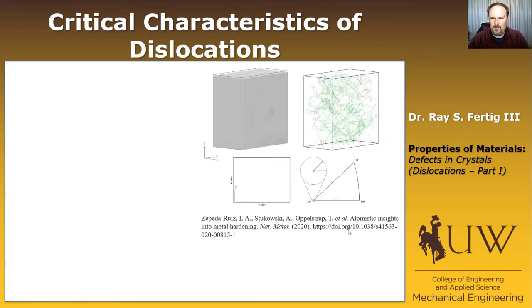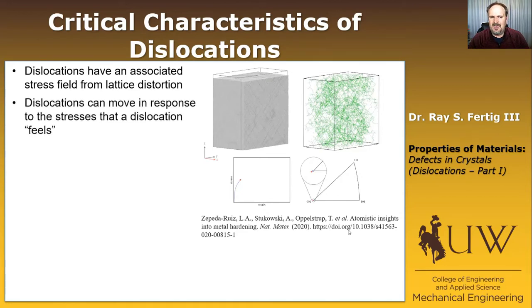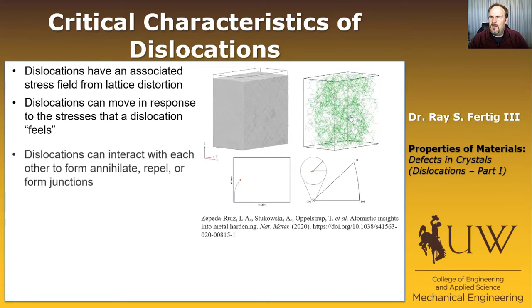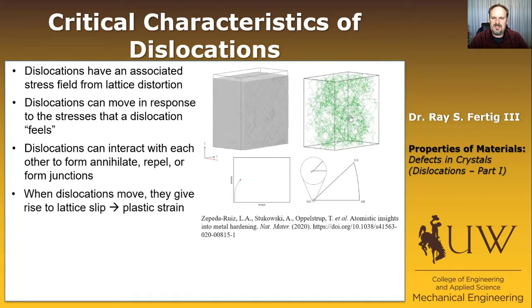Five critical characteristics of dislocations. Number one: dislocations have an associated stress field from lattice distortion — in the neighborhood of a dislocation, the lattice is warped. Number two: dislocations can move in response to stresses, whether from an applied load or from other dislocations. Number three: they can interact with each other and annihilate, repel, or form junctions. Number four: when dislocations move, they give rise to lattice slip, which is plastic strain — watching dislocations move is watching yielding happen.